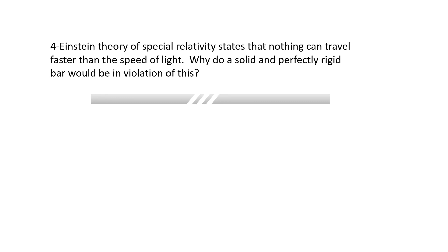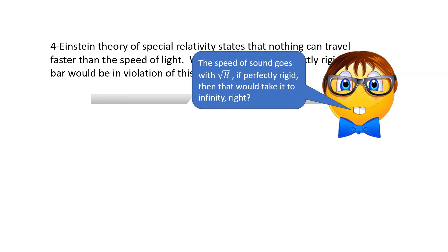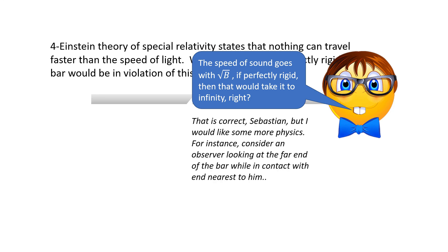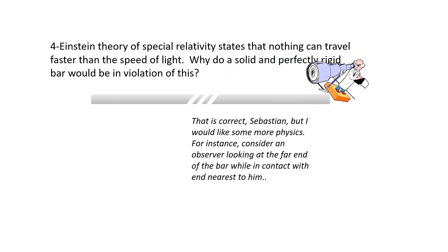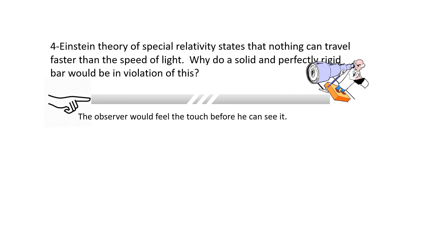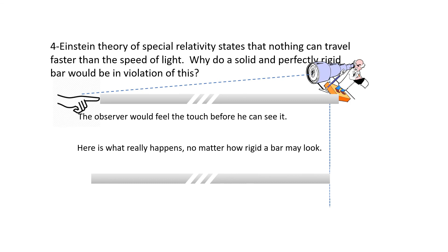Problem four: Einstein's relativity says nothing travels faster than light — why would a perfectly rigid bar violate this? The speed of sound goes with the square root of the bulk modulus; a perfectly rigid bar would take that to infinity. More physically: consider an observer at the far end of the bar in contact with the near end. We push the bar and the observer might feel the touch before seeing it — but no matter how rigid the bar looks, the push propagates at the speed of sound, which is much slower than the speed of light.